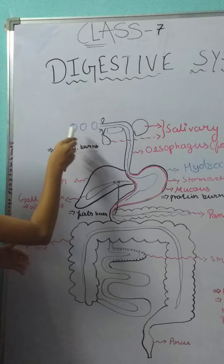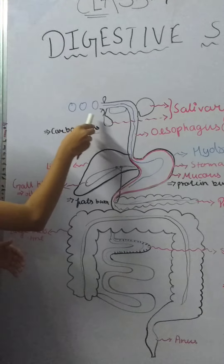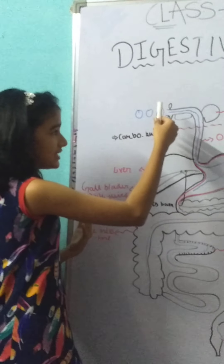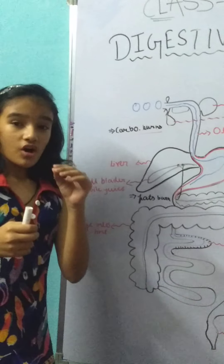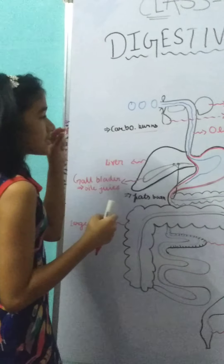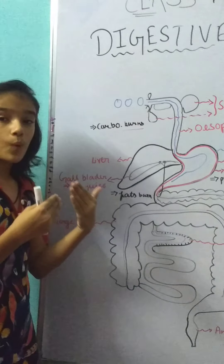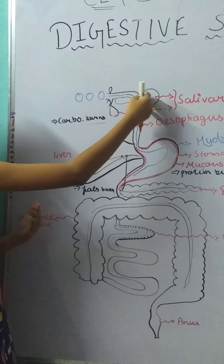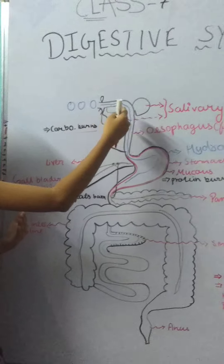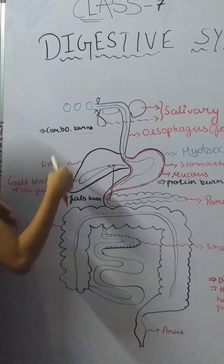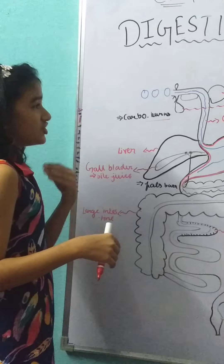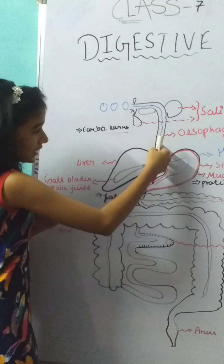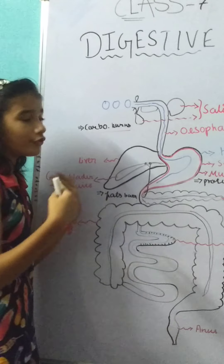Here is the mouth and we take food. When we chew it with the teeth, it breaks down into simple substances, and the tongue provides saliva with the help of salivary glands. It becomes very juicy. Then it goes to the esophagus, the food pipe.